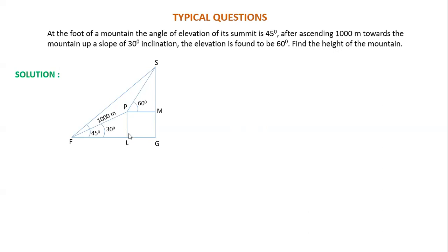This perpendicular is PL. When you drop a perpendicular, this length PL is equal to MG. PL is equal to MG because PM and LG are parallel. The distance between parallel lines is the same. Also, LG is equal to PM, because these two are also parallel, so the distance between them is also equal.